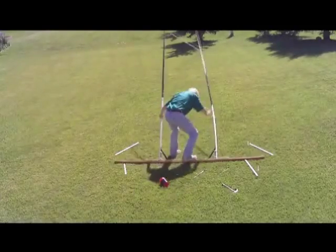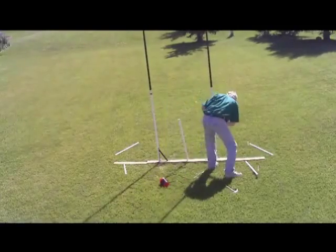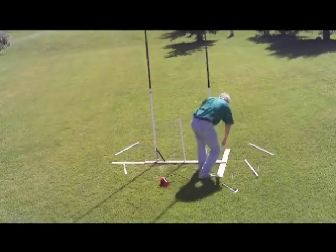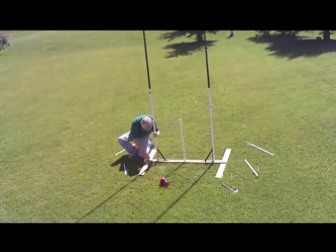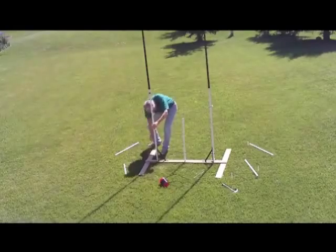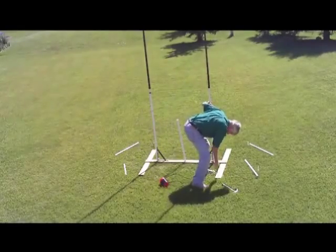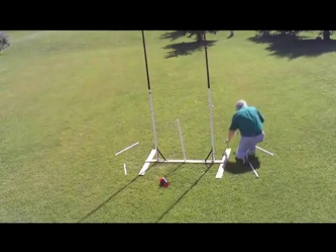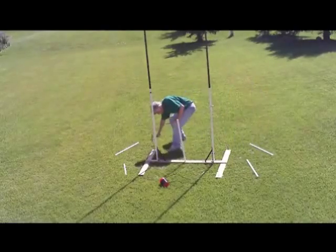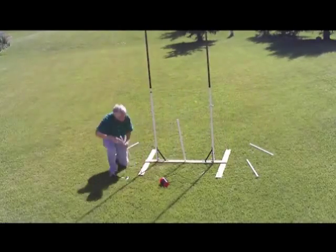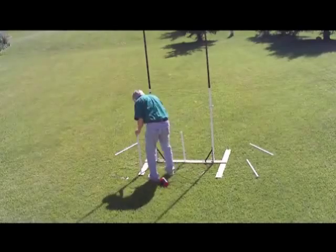So once everything's tightened down, just flip it up, it stands up, and then rotate the stabilizers around, tighten down the wing nuts, and hammer in four spikes to make sure it doesn't accidentally blow over. Depending on conditions, that's sort of optional.